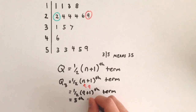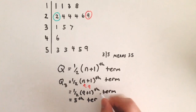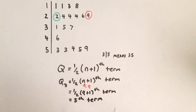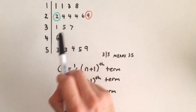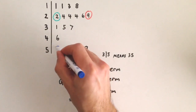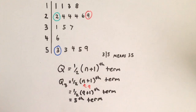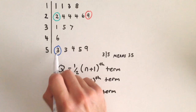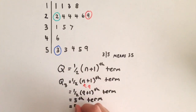So Q3 is located at our 5th term, and we start counting after the median: 1, 2, 3, 4, 5. Our Q3 is located right there. Reading off the stem and leaf plot, that is 53. So 53 is our Q3.